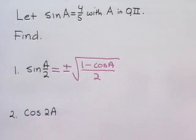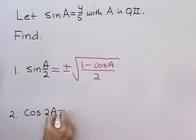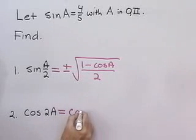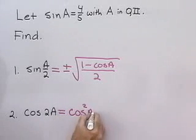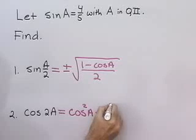For my cosine 2A, that's a double-angle formula. I've memorized that. There's a couple of different ways I can write it, but let's try this one. How about cosine squared A minus sine squared A?